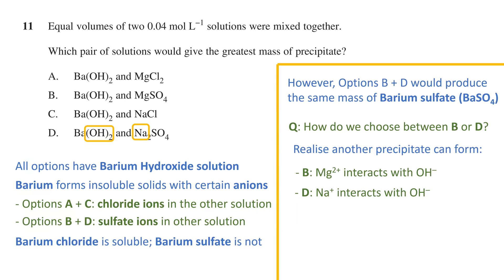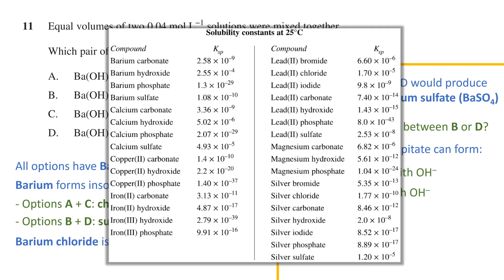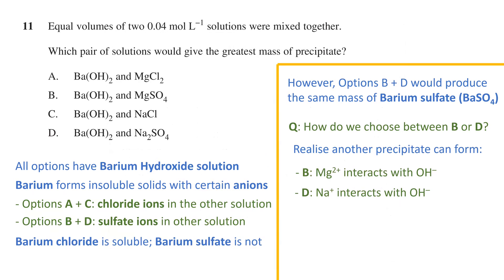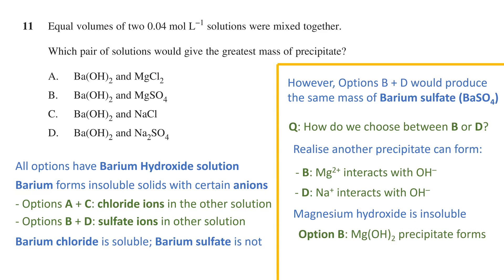Like all sodium salts, sodium hydroxide is completely soluble. However, magnesium hydroxide is insoluble, as we can see on the solubility table. Therefore, another precipitate forms in option B. As the only option with two precipitates, the mass of precipitate is maximized, and option B is the answer.